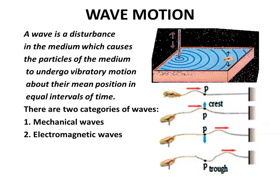From the above simple activities, we can define a wave as: a wave is a disturbance in the medium which causes the particles of the medium to undergo vibratory motion about their mean position in equal intervals of time. There are two categories of waves: mechanical waves and electromagnetic waves.